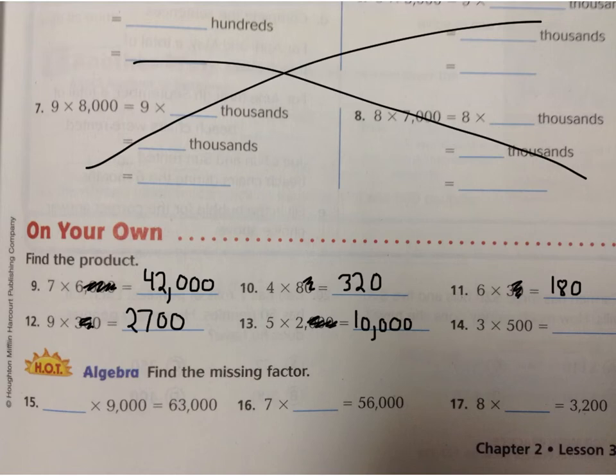Then I do number 14, which is 3 times 500. 3 times 5 is 15. Two zeros on the end is 1,500. So that is the strategy, and all of the homework has to do with using that strategy appropriately. Good luck, and I will see you tomorrow.